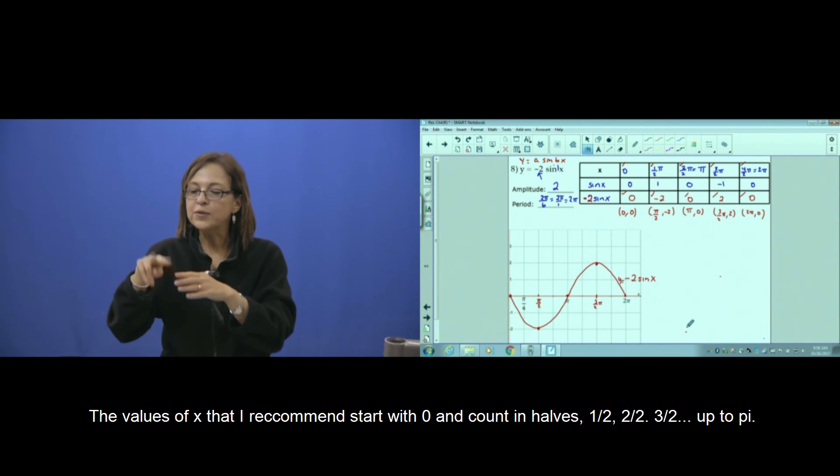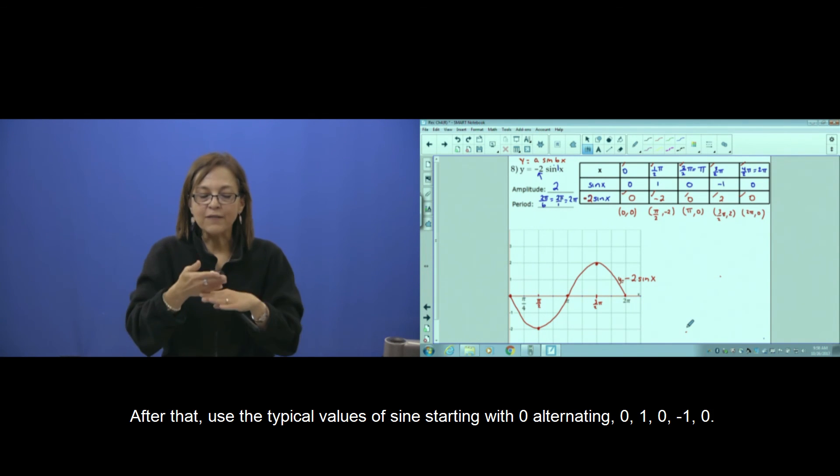2 half, 3 halves equal to π. And after you use the typical values of sine starting with 0: 0, 1, 0, negative 1, 0.